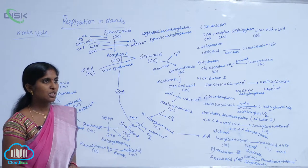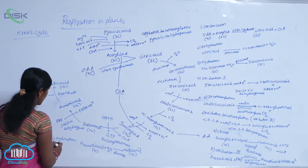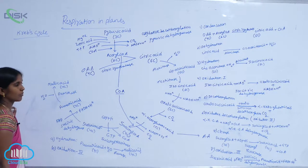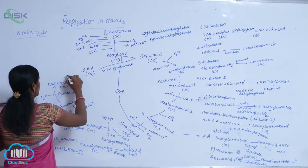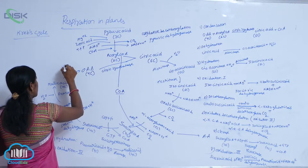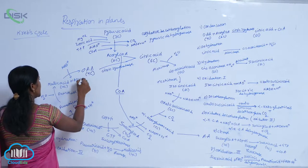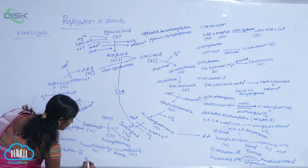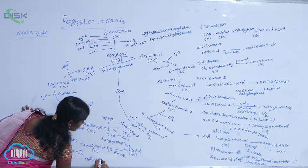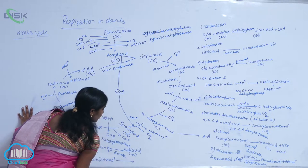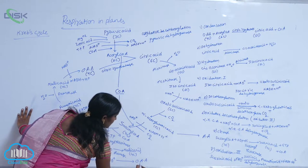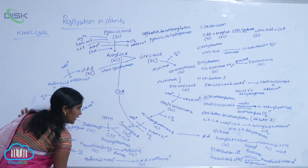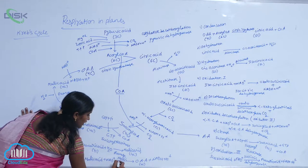The last reaction of Krebs' cycle is again oxidation. The 10th reaction is oxidation 4. Malic acid is oxidized into oxaloacetic acid. Here, 1 NAD+ is reduced into NADH and H+. The working enzyme here is malic dehydrogenase enzyme. The reaction: malic acid + NAD+ gives rise to oxaloacetic acid, which is a 4-carbon molecule, and 1 NADH and H+ is released.